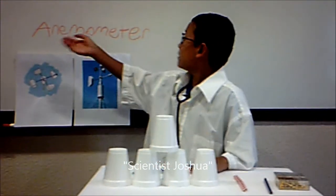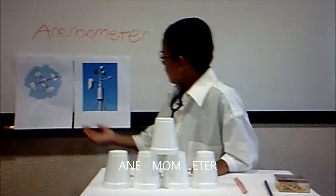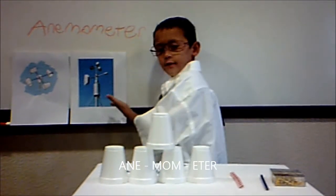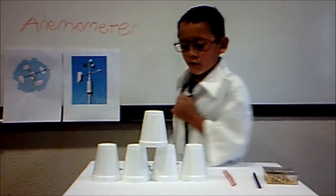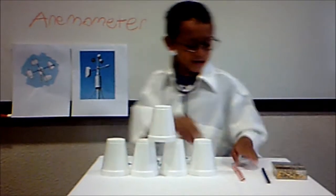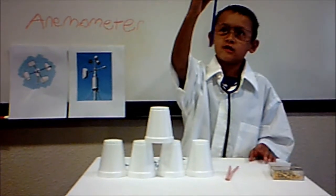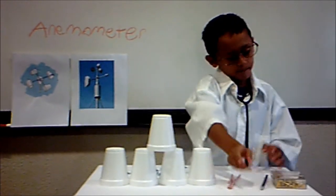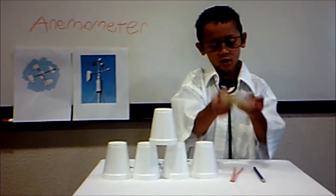We are going to build an anemometer. And here is the real scientist building, and we are going to build this today. Okay, so you need five cups, and two straws, and one pencil eraser on top. And now what you need is a box of pens.